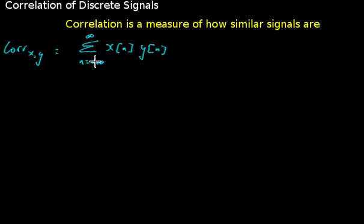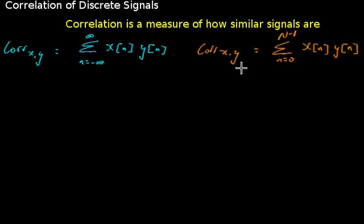Now this expression can be rewritten in this form over here when we are dealing with signals that have a lot of zero values. So for signals that have zero values up to sample number zero and also which have zero values for all samples greater than n minus one, where capital N represents the length of the signal.